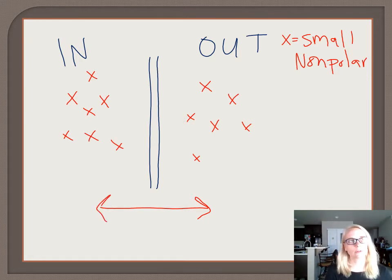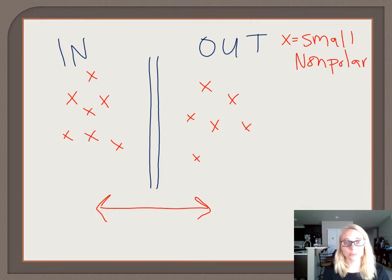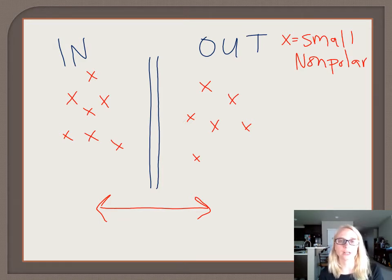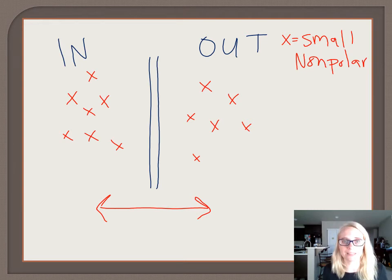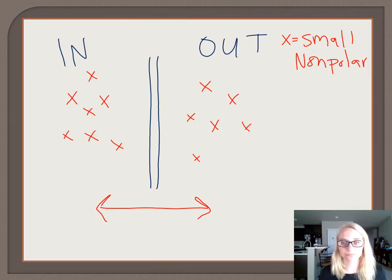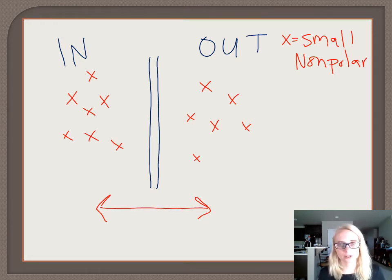Once equilibrium is reached, we have no directionality. The molecules continue to move equally in both directions, and once you reach equilibrium, diffusion no longer has a net direction — because diffusion is defined as substances moving from high concentration to low concentration until equilibrium is reached. At equilibrium, there's no gradient, no built-in directionality that substances want to go.